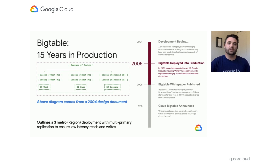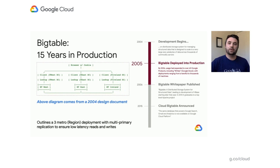It was the following year in 2006 that Google released the Bigtable white paper, leading to the development of HBase. After being in production for 10 years, Cloud Bigtable was released so companies outside of Google could benefit from the same technology used here at Google. And to make it easier for developers, HBase-compatible client libraries backed by Bigtable were also released.